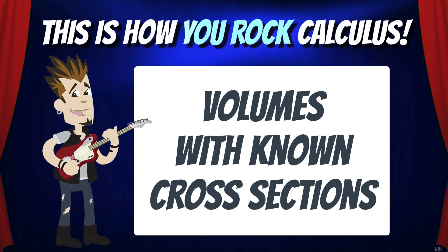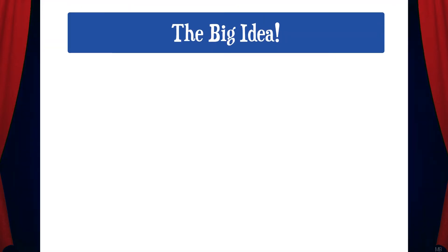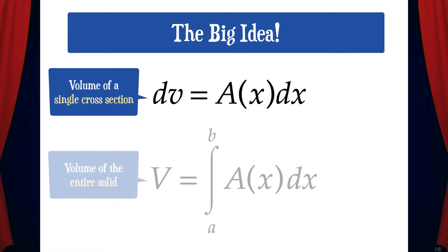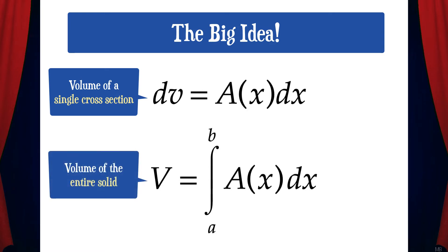Hey everybody! In this video, we'll continue to look at some example problems involving volumes with known cross-sections. First, let's quickly review the big idea. Remember, dv is the volume of a single cross-section, which is the area of the cross-section times the width dx. So the volume of the entire solid is the integral from a to b of A of x dx.